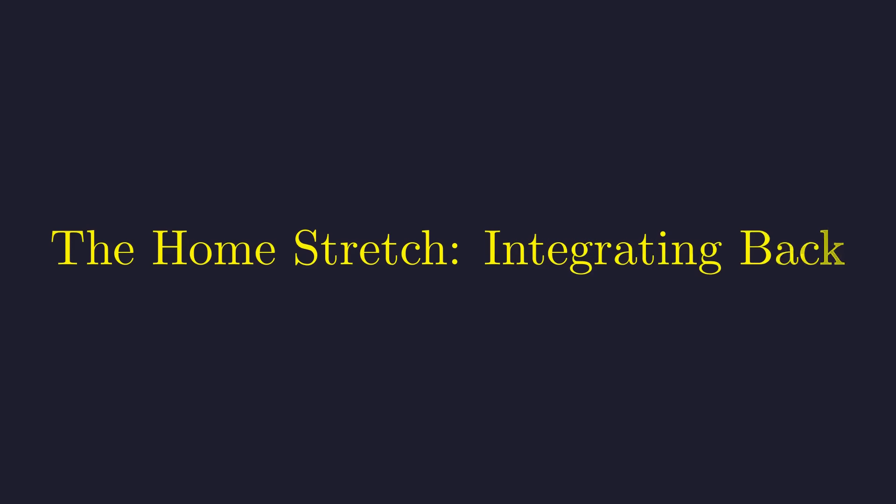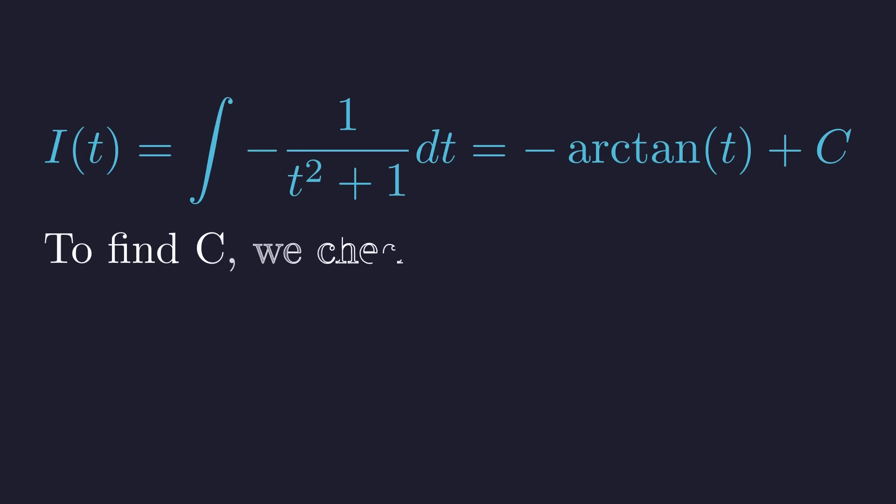We are almost there. We have the derivative I prime of t. Now we just need to integrate it with respect to t to get back to I of t. The integral of negative 1 over t squared plus 1 is a standard result. It's the negative arctangent of t plus a constant of integration, c. To find the constant c,